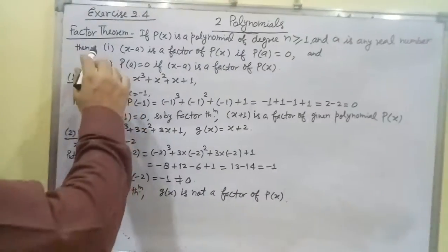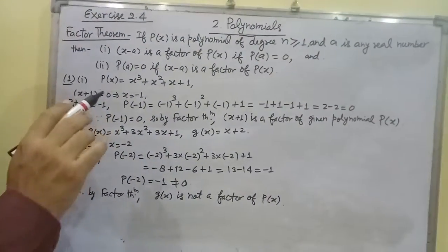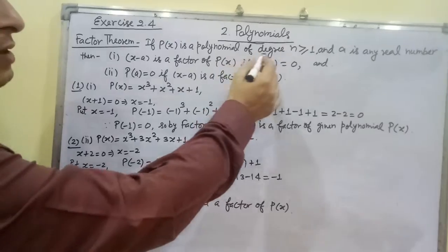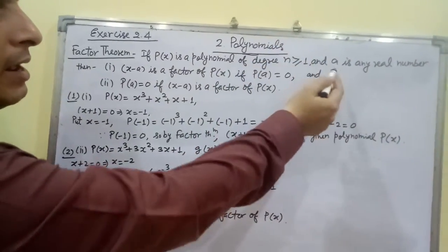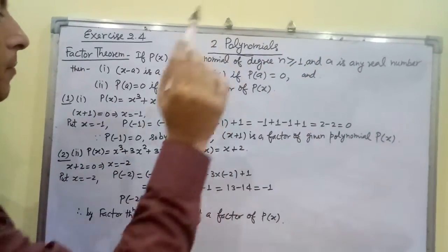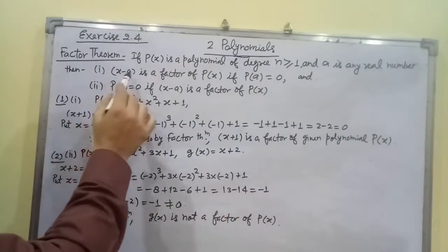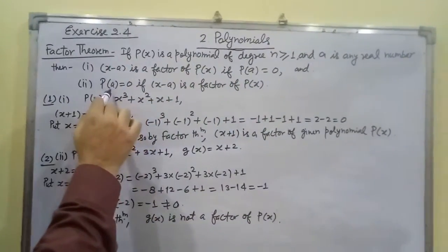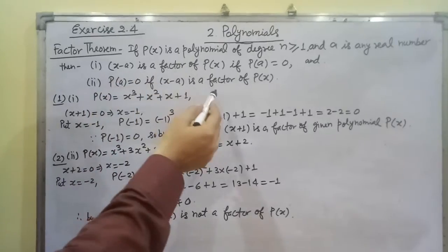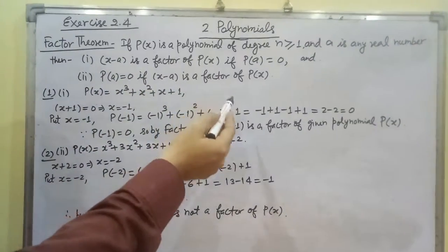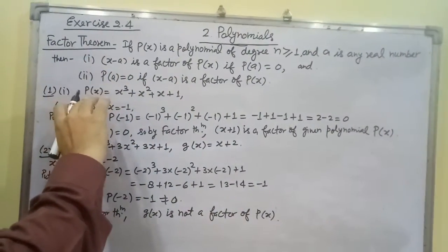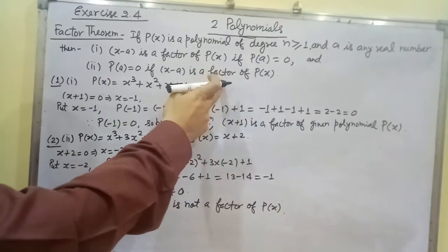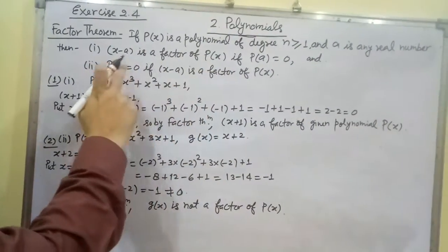Next topic is Factor Theorem, which is the same as the Remainder Theorem. If P(x) is a polynomial of degree n greater than or equal to 1 and a is a real number, then x minus a is a factor of P(x) if P(a) equals 0, and if x minus a is a factor of P(x), then P(a) equals 0.